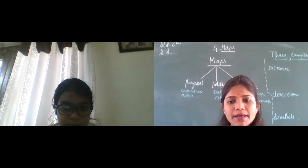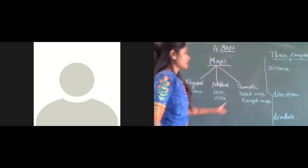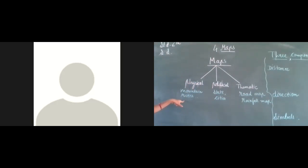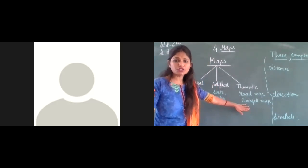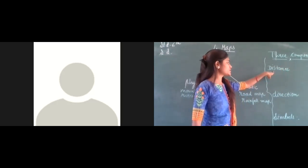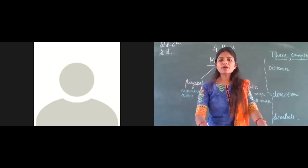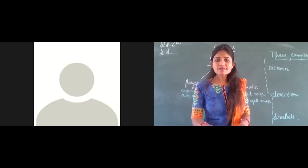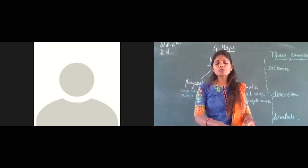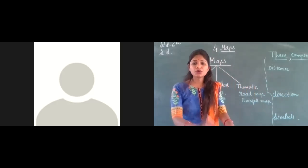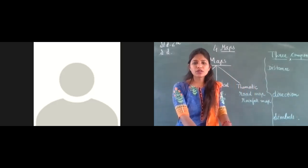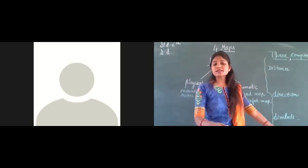So we have learned about the physical map — showing mountains and natural features; the political map — showing states and cities; and the thematic map — showing specific information like roads, rainfall, and forests. The three components of maps are Distance and Direction. For homework, underline the main points, draw the cardinal directions, and draw the compass. Symbols will be covered in the next lesson.